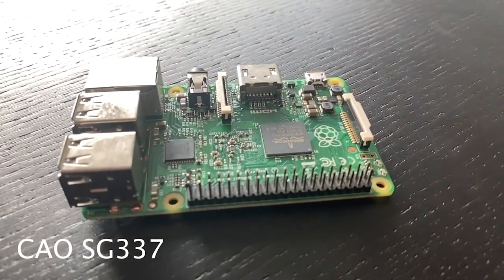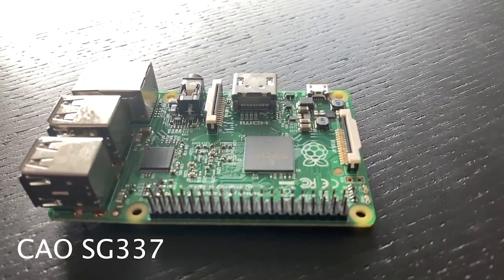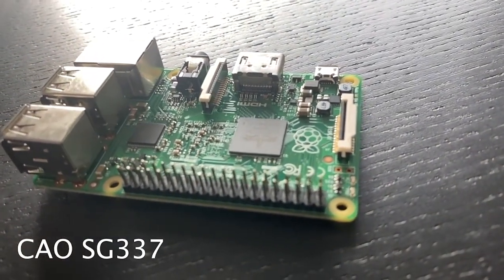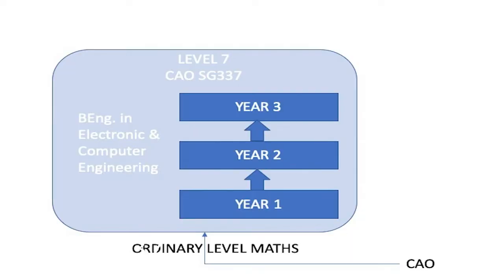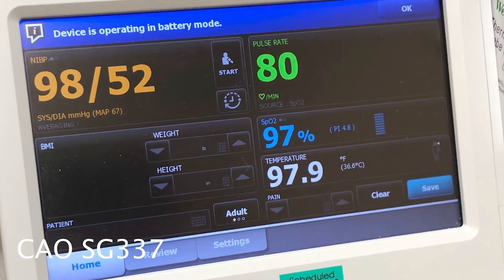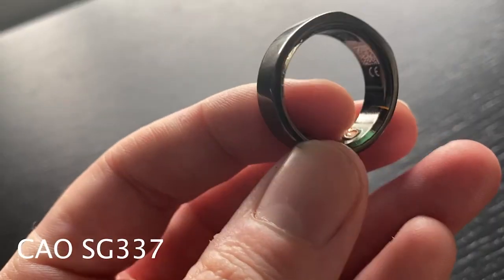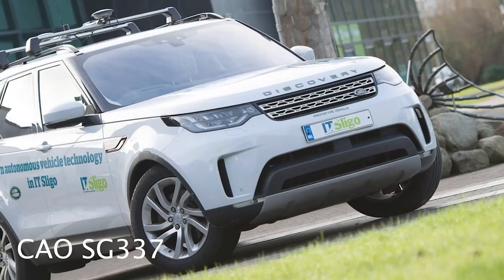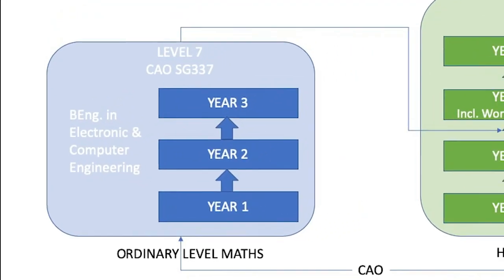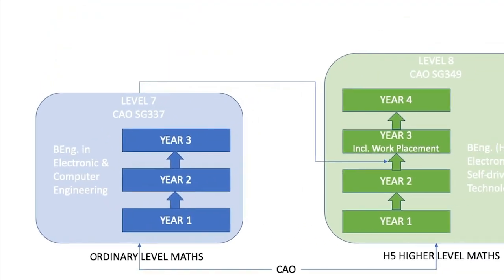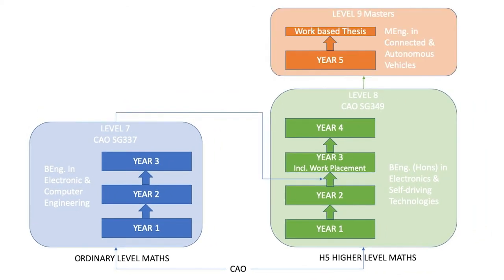If you're interested in technology or engineering but are not doing higher level maths, why not consider our level 7 in Electronic and Computer Engineering? This is a three-year programme that looks at the design and development of embedded electronic systems - the medical devices that keep us healthy, the consumer devices that keep us entertained, or the control systems that keep us safe on the road. You can then progress onto the level 8 in Electronics and Self-Driving Technologies, and from there to the master's. Check out the link below for more information.